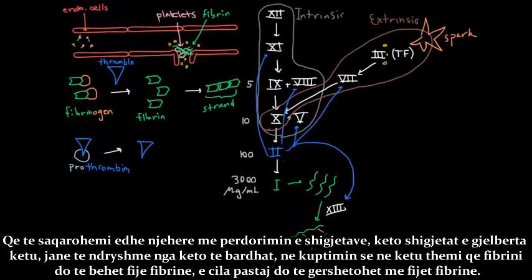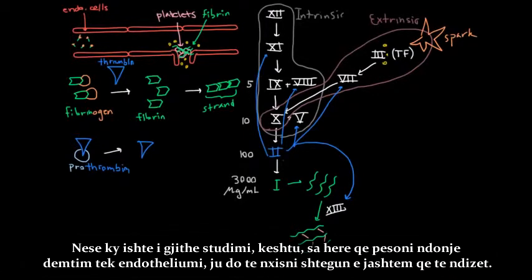And to be clear again with our use of arrows, this green arrow here is different from these white arrows in the sense that here we are saying that fibrin is going to become fibrin strands which is going to become interlaced fibrin strands. So if this was all there was to the story, then every time you had a little bit of damage to your endothelium, you would cause the extrinsic pathway to fire.